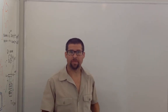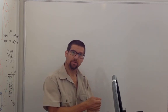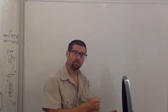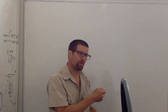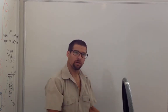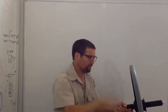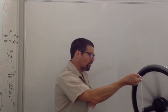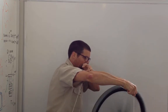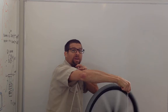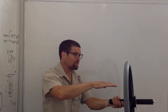We want to understand precession. When I'm holding a wheel on one side and not on the other, it falls. The torque of gravity — from the force of gravity downward and the tension of the string upward — produces a torque into the board that rotates the wheel into the board. But when the wheel is spinning, the torque of gravity produces a change in angular momentum that adds to the angular momentum the wheel already has, to rotate the axis of rotation into the board.